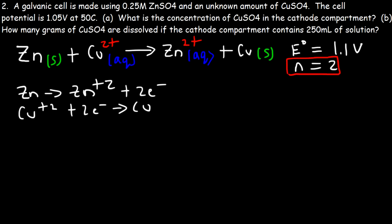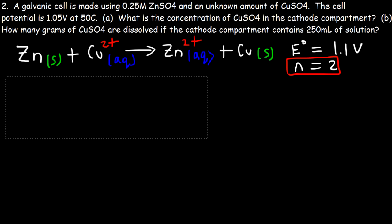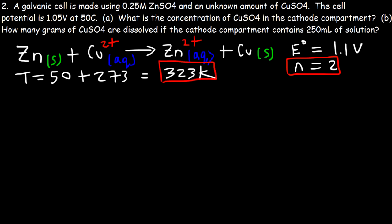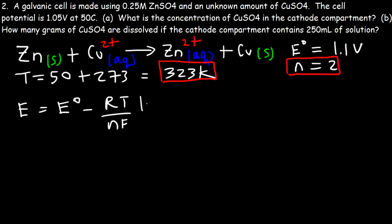Next, convert the Celsius temperature to Kelvin: 50 + 273 = 323 Kelvin. Since the temperature is not at the standard 298 Kelvin, we must use the full Nernst equation: E = E° − (RT / NF) × ln Q.